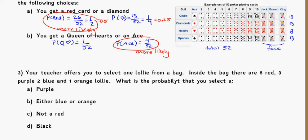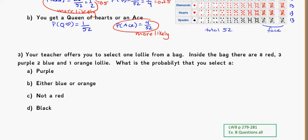Another example for us to look at. Your teacher offers you to select one lolly from a bag. Inside of the bag, there are 8 red, 3 purple, 2 blue, and 1 orange lolly. What is the probability that you select one of these following things? So, could be helpful. Think about drawing up a lolly bag for yourself.